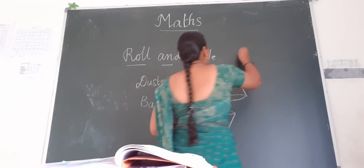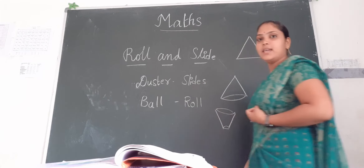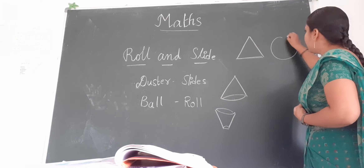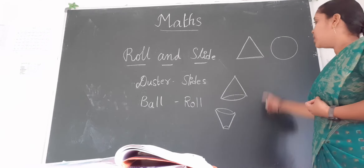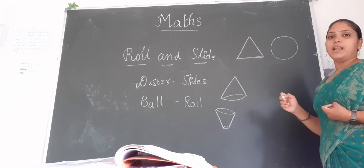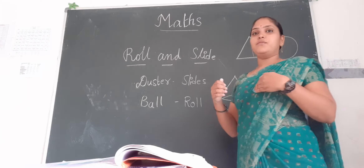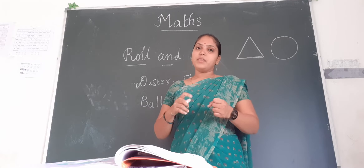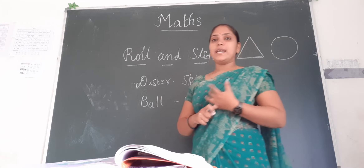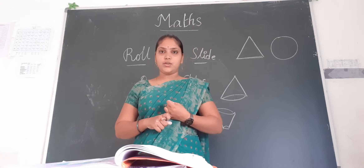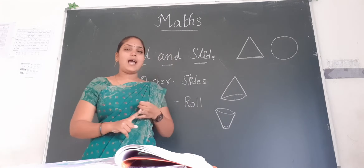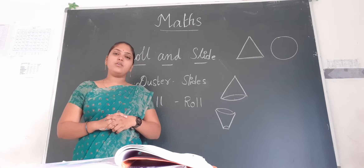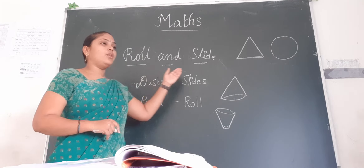Some shapes are formed by straight lines and some by curved lines. Circle is formed by curved lines. Next we learned the names of shapes: circle, triangle, square, and rectangle. We also learned the number of sides: circle has zero sides, triangle has three sides, square has four sides, and rectangle has four sides.